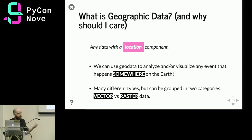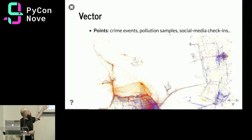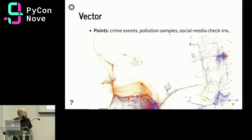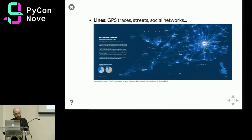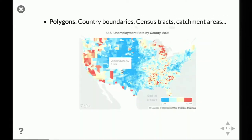The difference is that vector data are discrete, or can be discretized, while raster data are continuous. Vector data can be points — such as crime locations, pollution samples, or social media check-ins. It can be lines, such as GPS traces, social networks, or commuting patterns. And it can be polygons, such as country boundaries, city boundaries, and census areas.